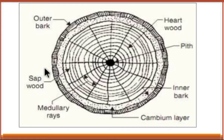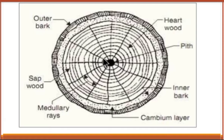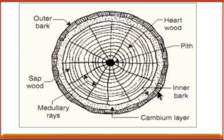Next is outer bark. The outermost layer of the tree is called the outer bark. These radial lines you can see are called medullary rays. These medullary rays help in holding the annular rings. These are the parts of a tree when you cut the cross section.